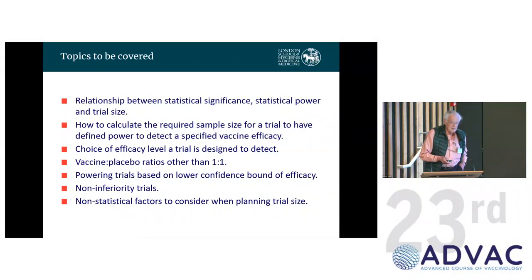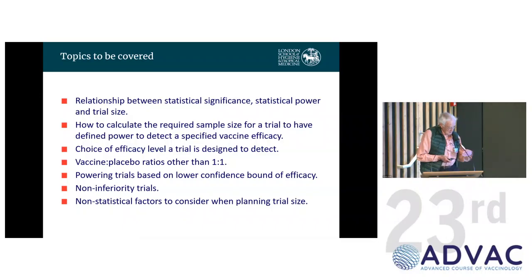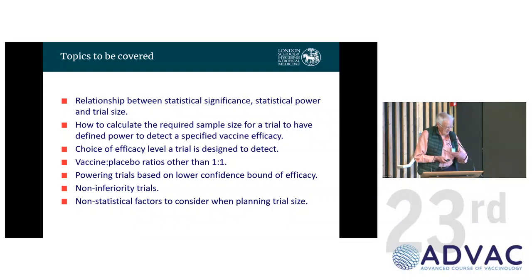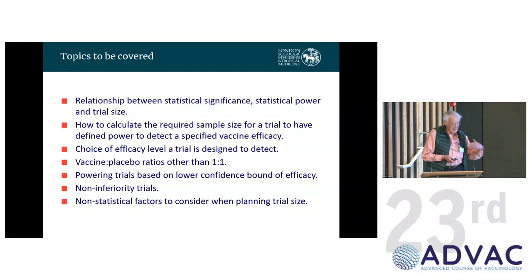What I want to cover is the relationship between statistical significance, statistical power, and trial size — how to calculate the required sample size for a trial to have defined power to detect a specific vaccine efficacy. This will be familiar to statisticians, and I apologize if it's at a fairly basic level. For non-statisticians, I apologize if it doesn't seem basic enough.